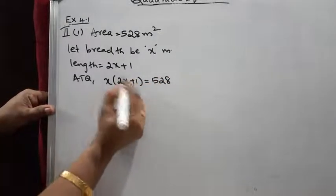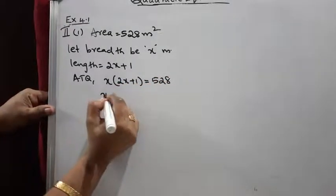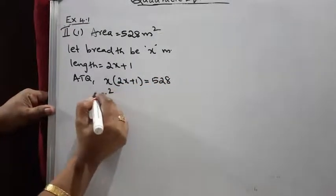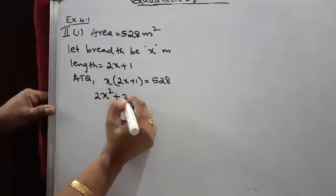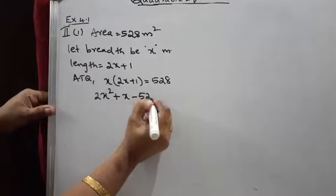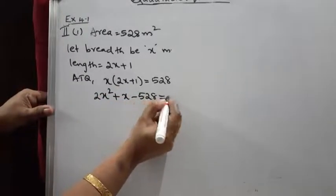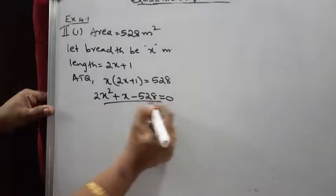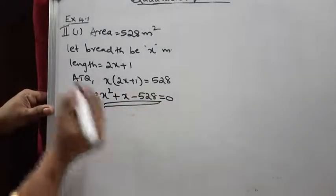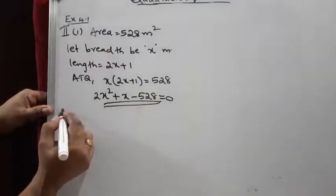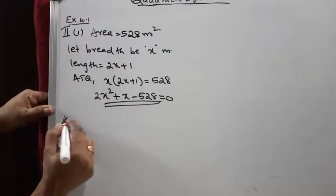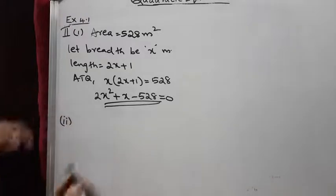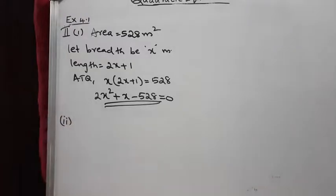Simplifying: 2x² + x − 528 = 0. This is a quadratic equation. We have represented that situation in the form of a quadratic equation.